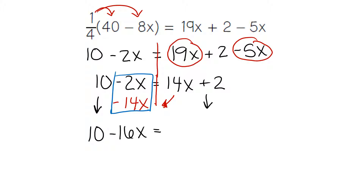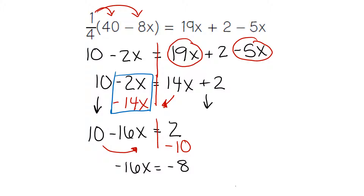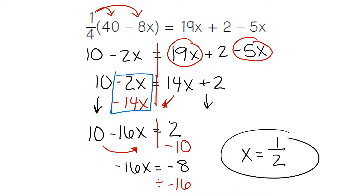We can bring down the positive 2 on the other side. Still combining like terms: 10 is on the left, 2 is on the right. To move it to the opposite side, we do the opposite of 10 — a minus 10. I bring down the negative 16x. 2 minus 10 is negative 8. Our last step is to divide by negative 16. Negative 8 divided by negative 16 gives us 1 half. x equals 1 half.